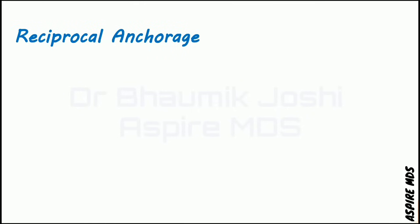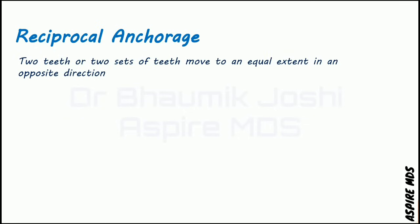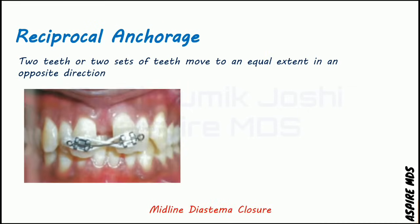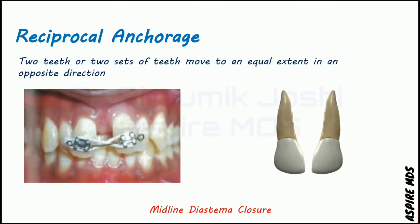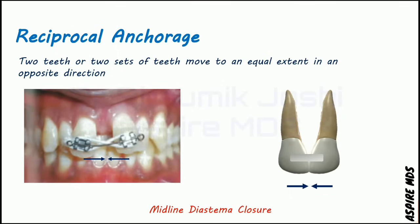Another kind of anchorage is reciprocal anchorage, where two teeth or two sets of teeth move to an equal extent in opposite directions — equal and opposite movements are seen. The first example is midline diastema closure using an elastic. Two incisors are present with a space between them (midline diastema). An elastic applied to both will pull them closer, and these equal and opposite forces help in closing the diastema. This is known as reciprocal anchorage.